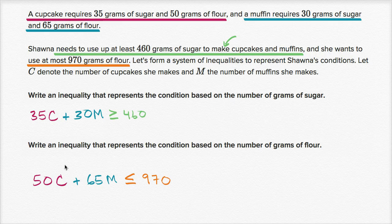And we're done. If you wanted to, you could ask: what pairs of C and M satisfy both of these inequalities? That combination gives the number of cupcakes and muffins she could make in order to satisfy her actual conditions.